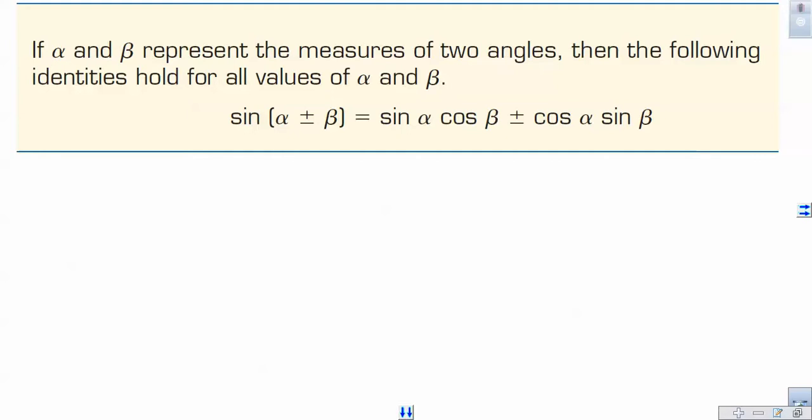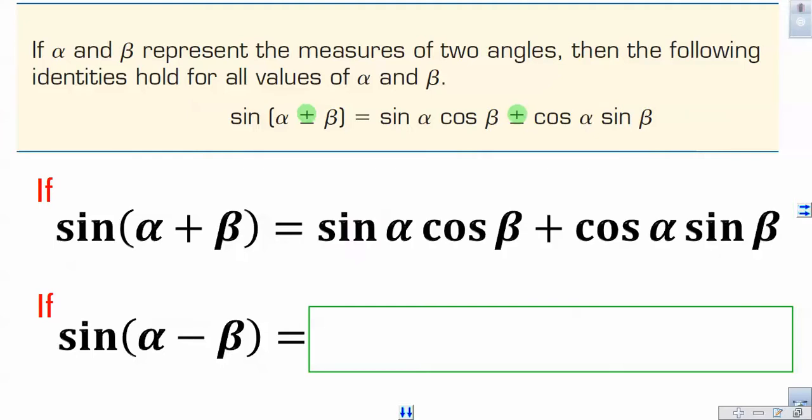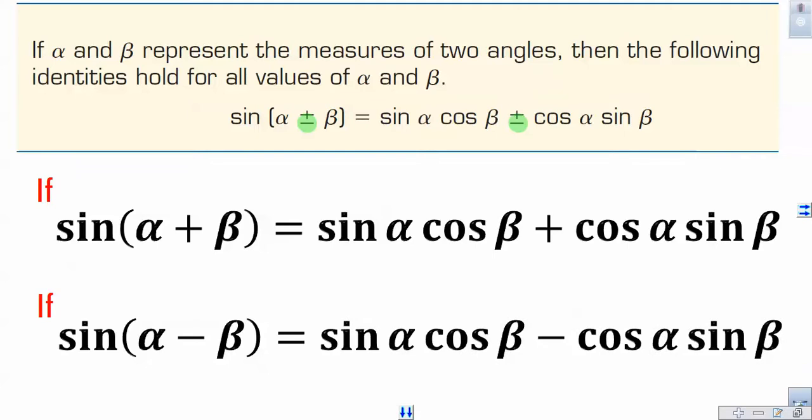What this identity statement here means is that if you're looking at sine of α plus β, which is this symbol here, plus sign, notice it's on top, we must use the plus sign that's also on top there, and we use this equation here. Sine of α times cosine β plus cosine α sine β. If it's negative underneath, then we're going to use these ones here. Sine α cosine β minus cosine α sine β. Let's put this to work.